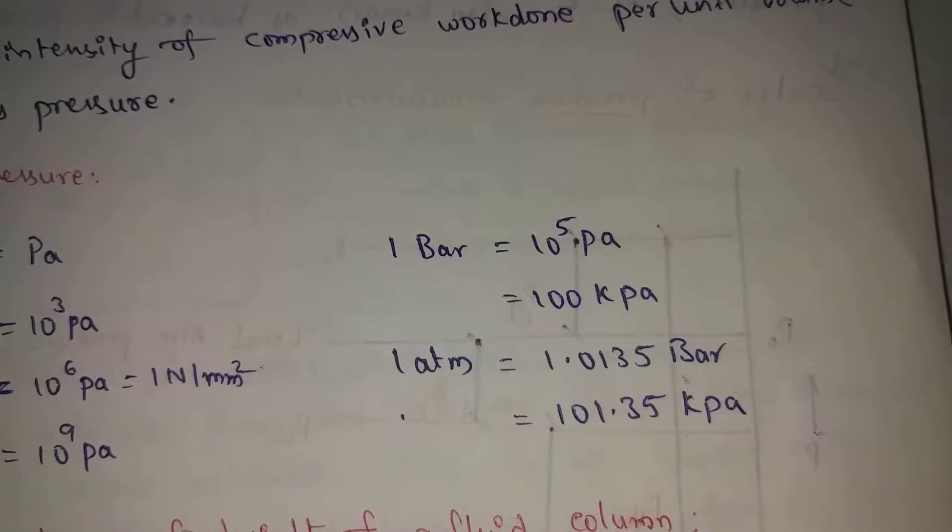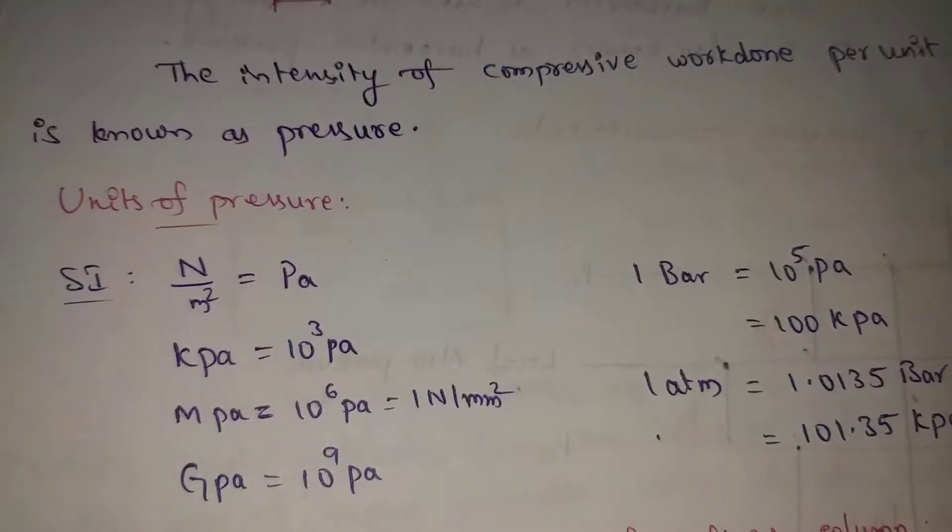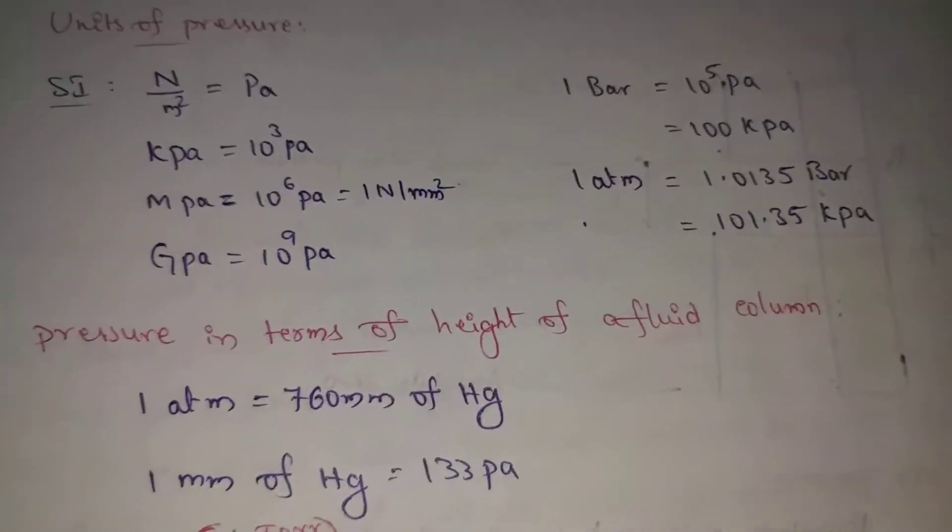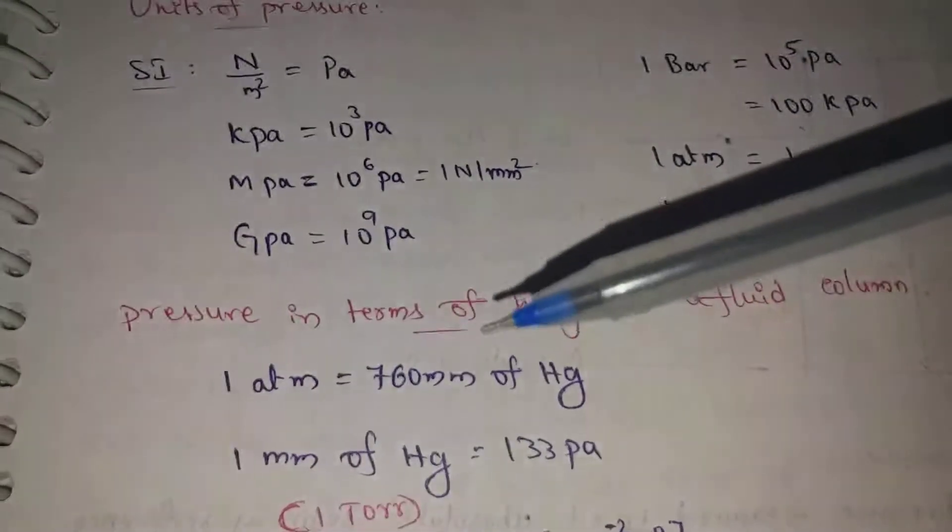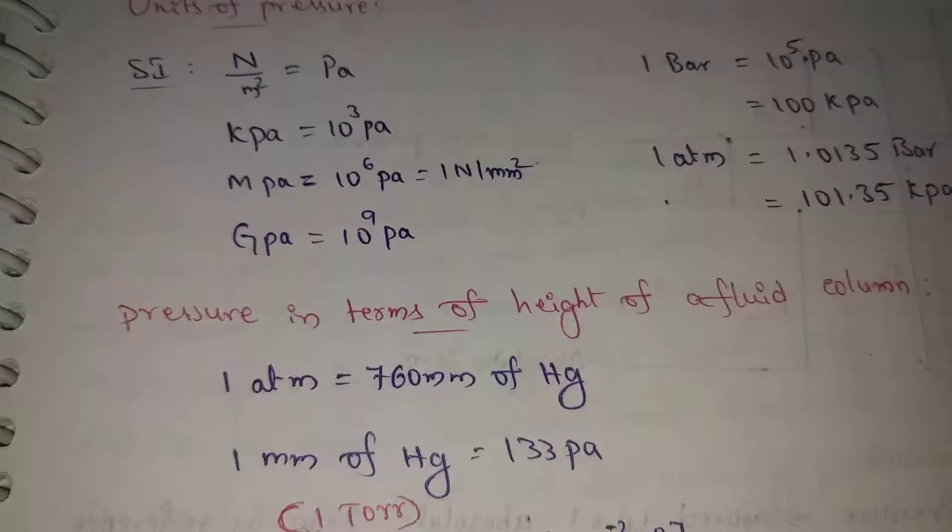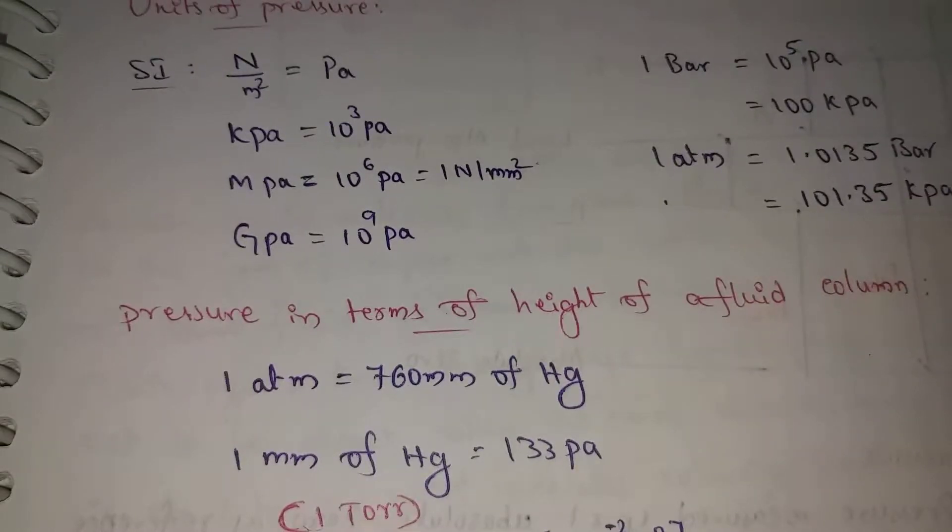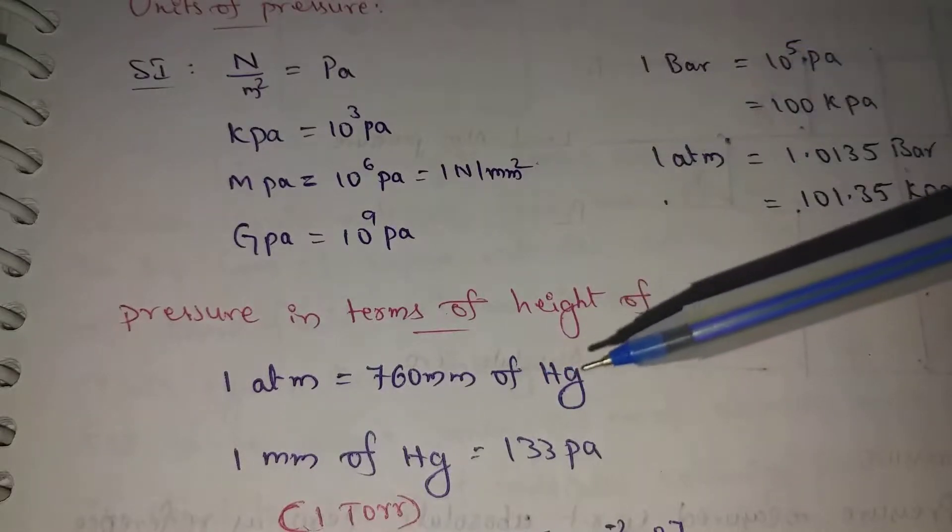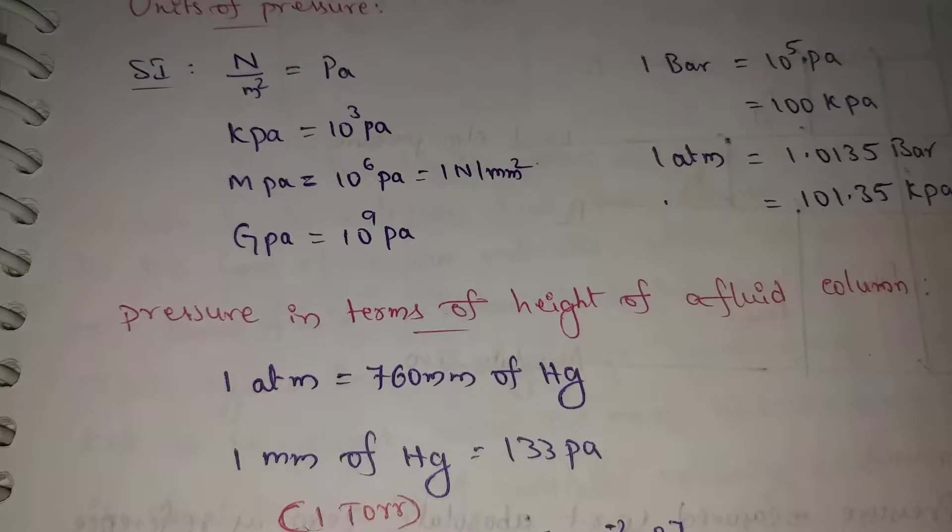Next, 1 atmosphere equals 1.0135 bars, kilopascal convert 1.0135 kilopascal. This is a pressure unit, very important. Pressure in terms of height of a fluid column: 1 atm equals 760 mm of Hg. Hg means mercury height.